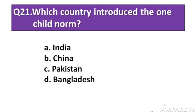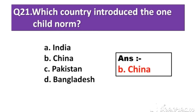Question number 21: Which country introduced the one-child norm? Option A: India. Option B: China. Option C: Pakistan. Option D: Bangladesh. The right answer is Option B: China.